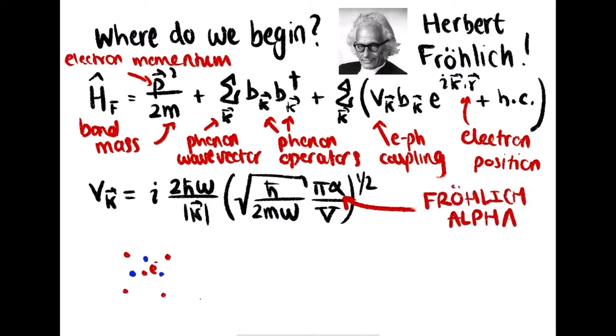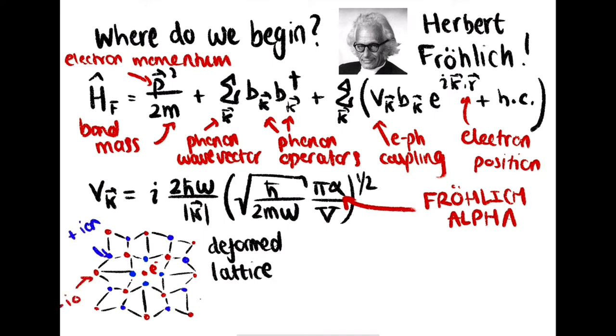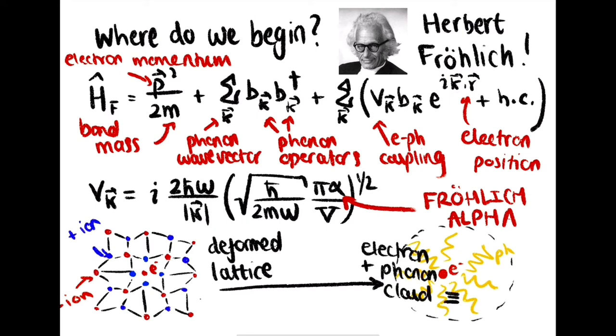This scenario can be pictured as an electron repelling negative ions and attracting positive ions. The self-induced potential arises, which acts back on the electron and modifies its properties. This can also be viewed as an electron dressed with a virtual cloud of phonons that move with the electron through the material, collectively known as a polaron.